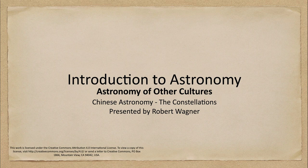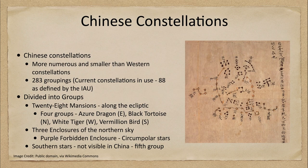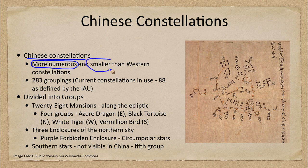What we see is that Chinese constellations were more numerous than those in Western society, and they were also far smaller, consisting of fewer stars.